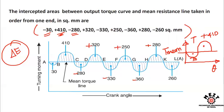We draw the turning moment diagram in a rough way without dimensions, marking the areas: minus 30, plus 280, minus 220, and plus 410 square millimeters.